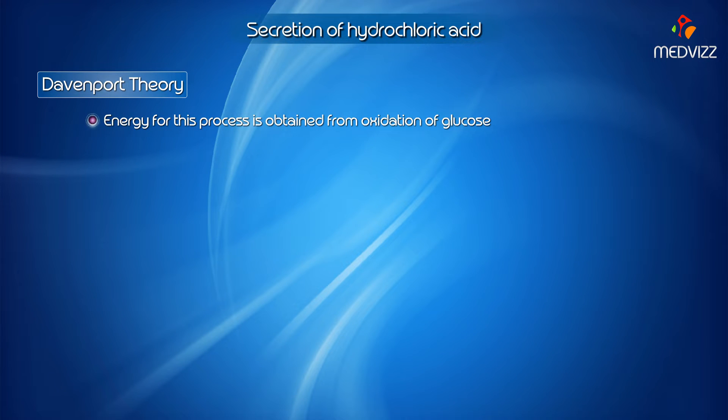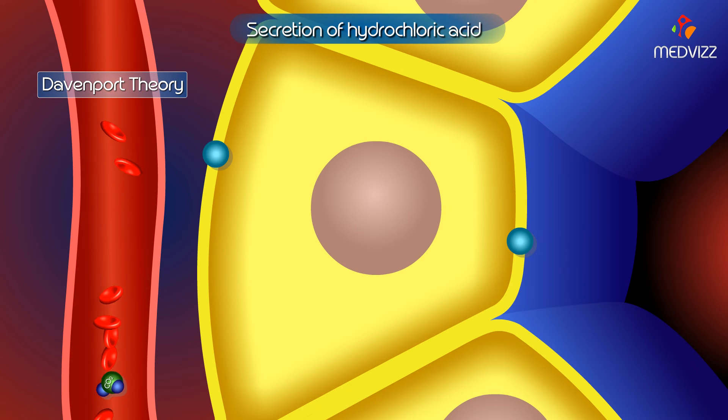Energy for this process is obtained from oxidation of glucose. Carbon dioxide is derived from metabolic activities of parietal cell and from blood as well.